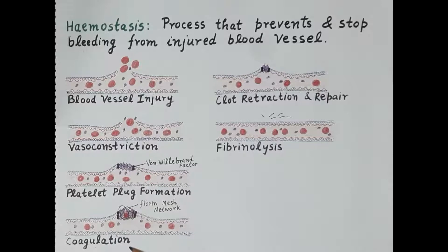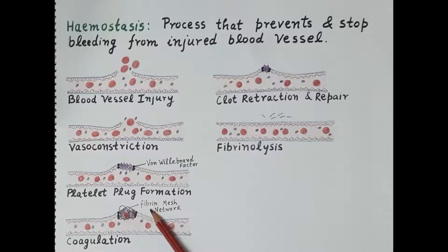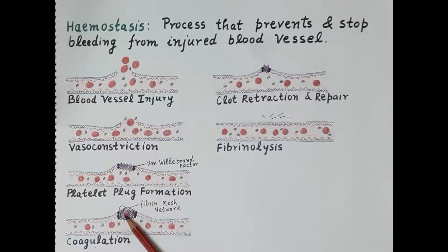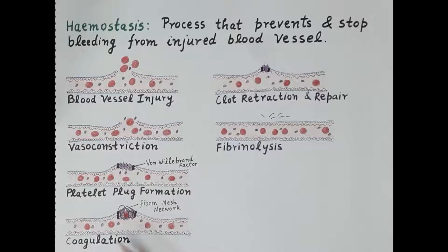In coagulation, a clot is formed. A fibrin mesh network is produced, which is laid over the platelet plug to strengthen it. The clot seals the injured site and further stops the bleeding. Coagulation is then followed by clot retraction and repair.